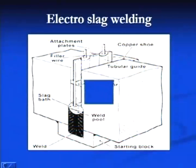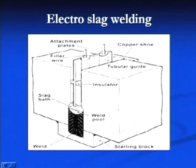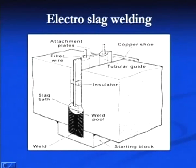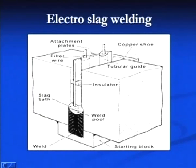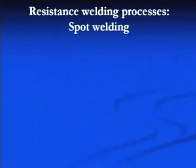The three-dimensional diagram of electro slag welding shows two consumable electrodes at different locations and copper shoes on each side. There is a weld pool in the middle, a backing plate at the base, and the copper shoes are moved in the upward direction.